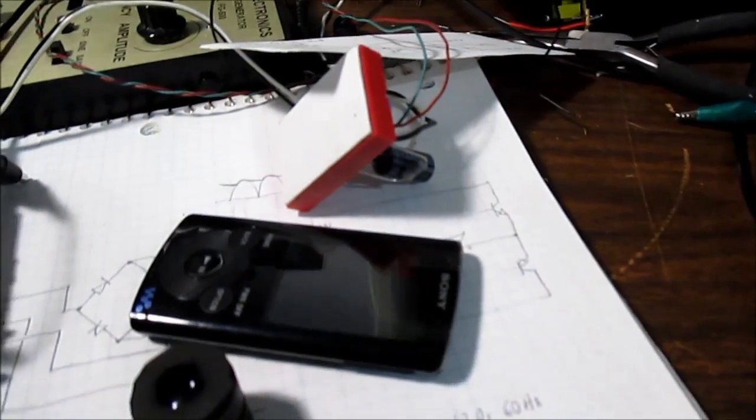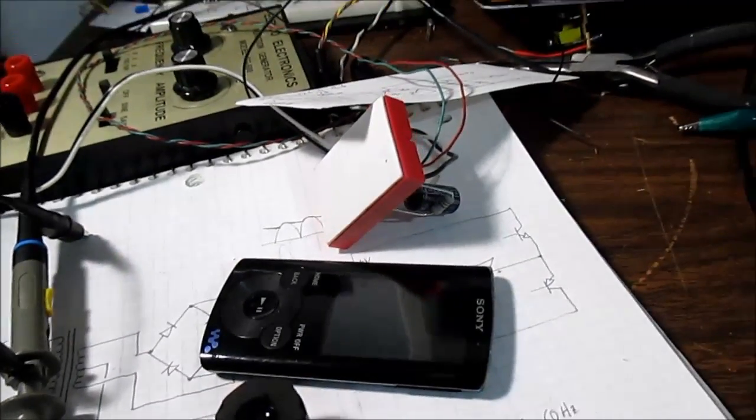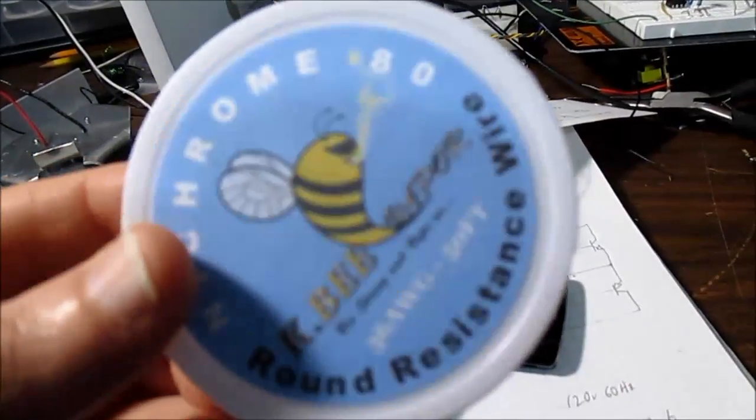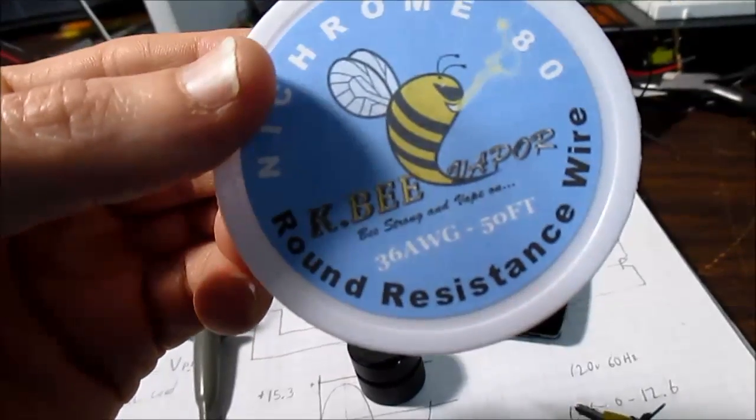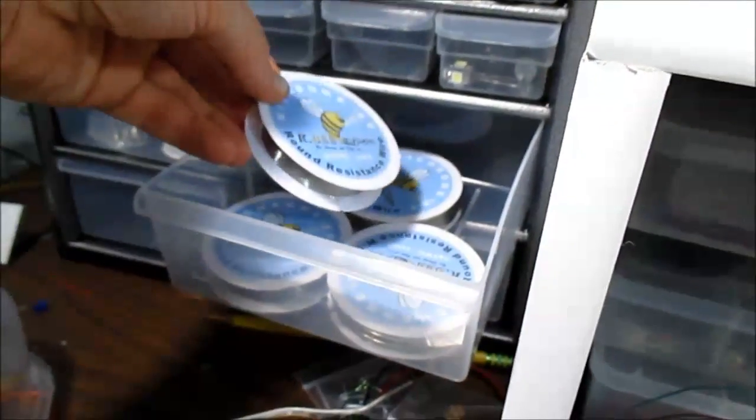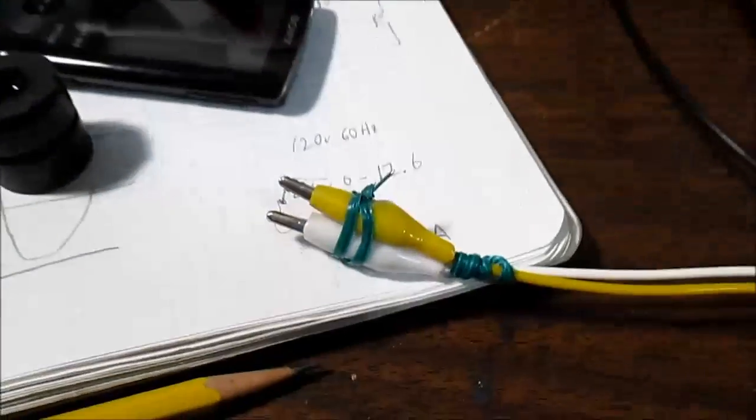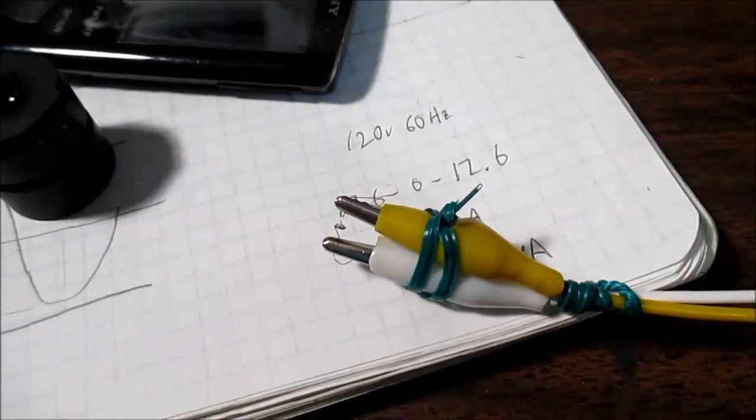And thanks to the do-it-yourself vaping community, you can buy nichrome wire off of eBay. And I'm using 36 gauge. I got all kinds of different gauges for making heaters and resistors and things, but that's the story on the nichrome.